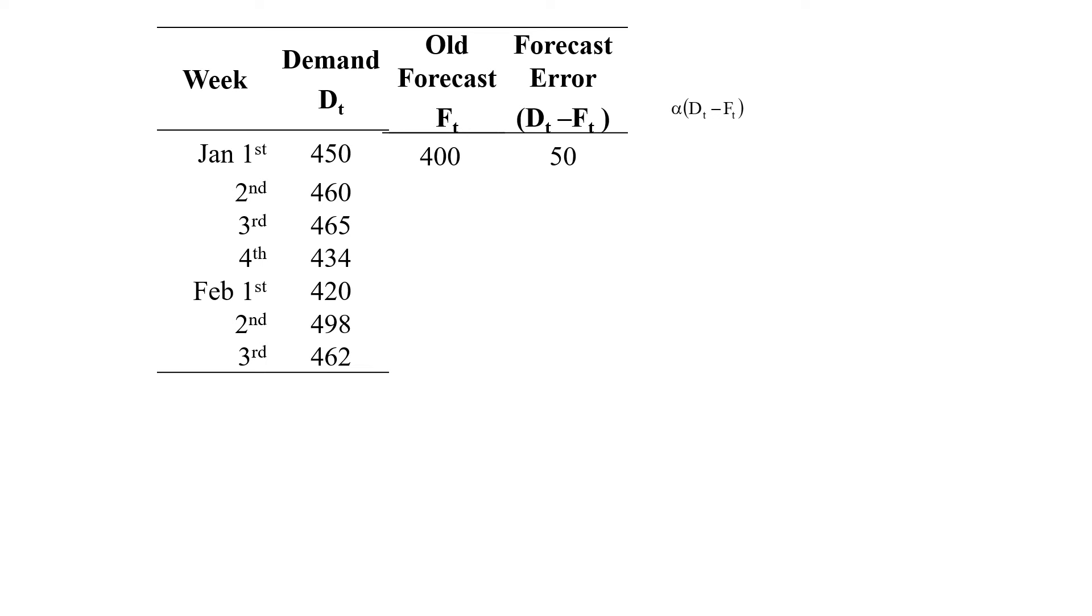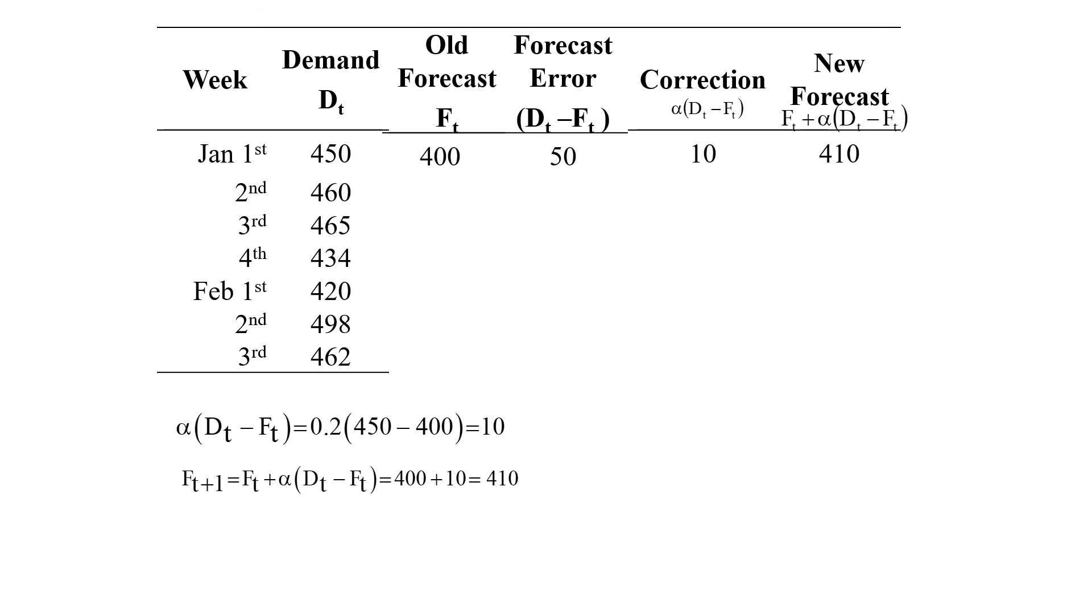And when that is multiplied with the exponential smoothing coefficient, then we'll be getting the corrected value which is coming to be 10 in the first case. And based upon that we can find out the new forecast which is 410. The old forecast was 400 but the new forecast is coming to be 410.